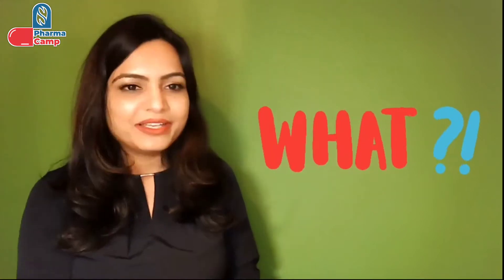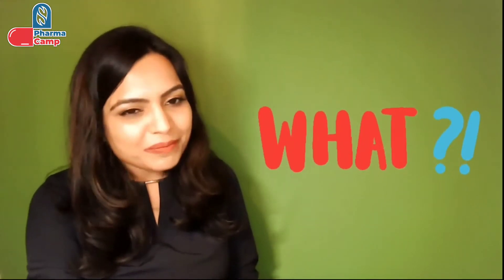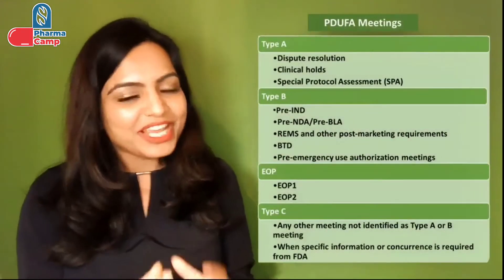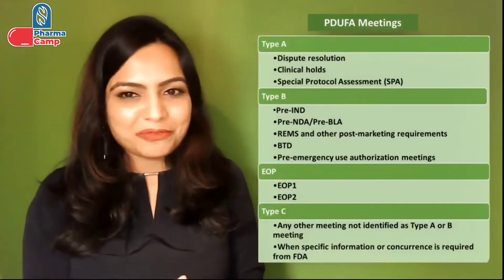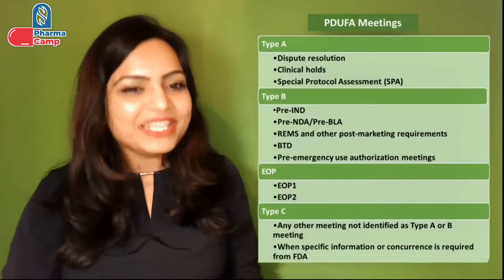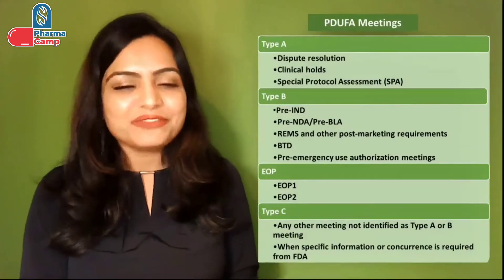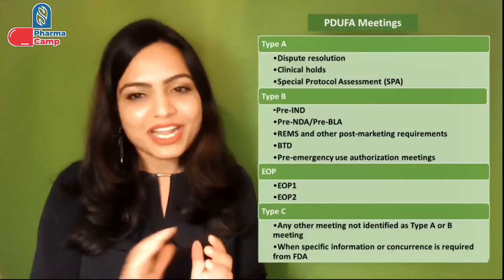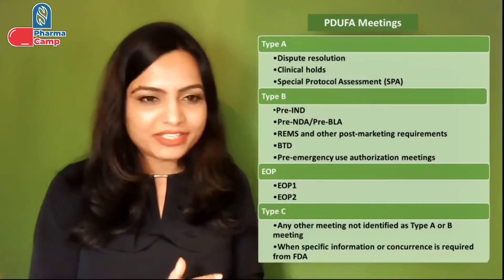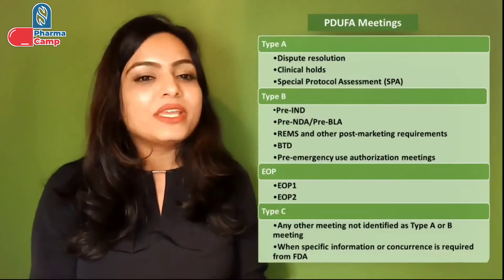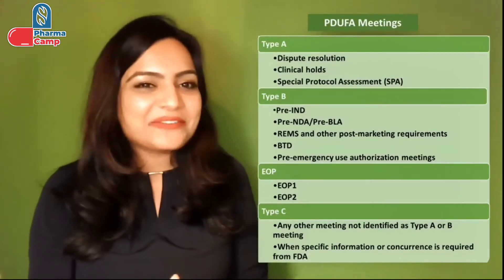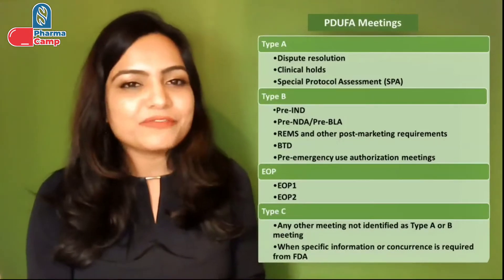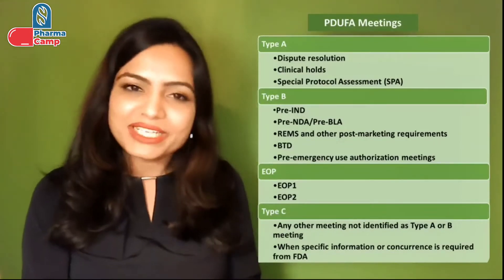So let's start. The first question is: what are the types of meetings with FDA? If you are developing your drug molecule under PDUFA, then FDA has four types of meetings — Type A, Type B, End of Phase (also called EOP), and Type C meetings. Each kind of meeting has a different purpose. Let's discuss the purpose of each one by one.